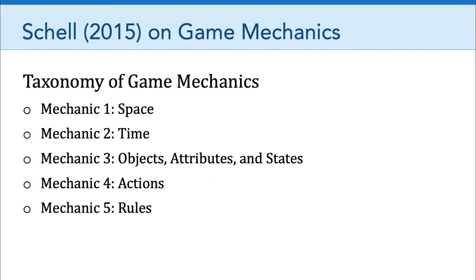The fifth mechanic is rules, and these are arguably the most fundamental mechanic in games. Rules define the space, the timing, the objects, the actions, the consequences of actions, the constraints on those actions, and the goals themselves. In other words, rules make possible all the other mechanics and add the crucial thing that makes a game a game, which is goals.